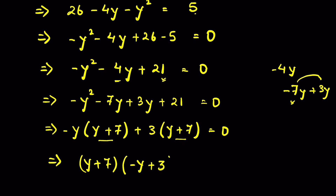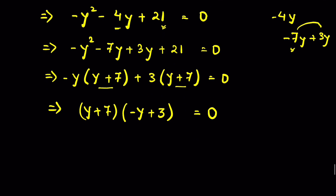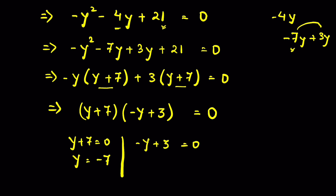We have two solutions: either y plus 7 is equal to 0, giving y is equal to minus 7, or minus y plus 3 is equal to 0, giving minus y equals minus 3, so y is equal to 3.